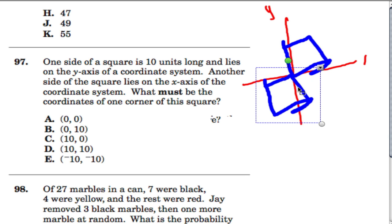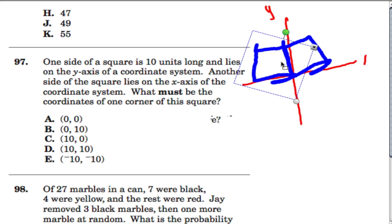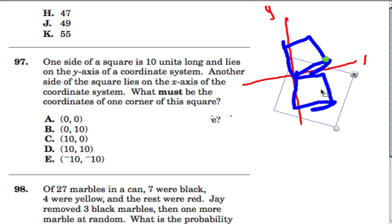Or I could move it here. Turn a little bit to fit. It would be 10 on the y, 10 on the x, or here. In all four cases, the only point that we can actually have for all the squares is 0, 0, which is our answer.